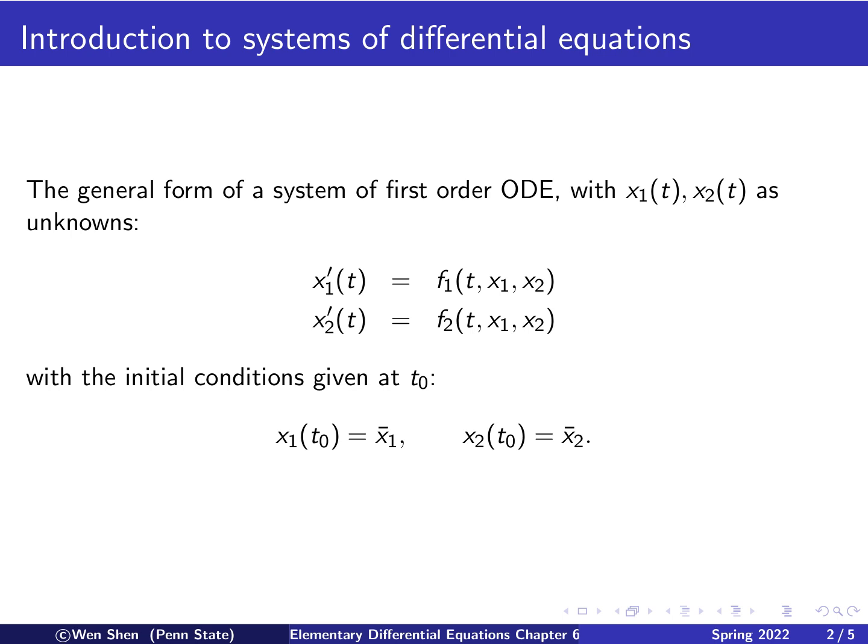And they are usually associated with the initial condition, that you have an initial time, t0. Then the two unknowns, x1 and x2, the value at t0 is given, would be x1 bar, x2 bar, respectively. So this is a general setting.